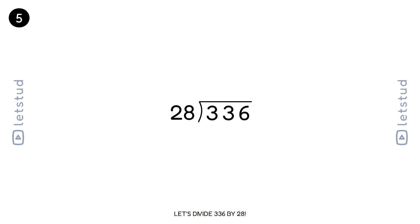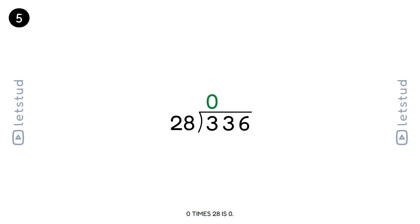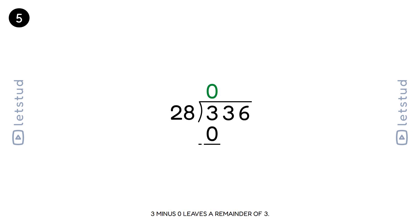Let's divide 336 by 28. We start with the first digit, 3. How many times does 28 fit into 3? 0 times. 0 times 28 is 0. 3 minus 0 leaves a remainder of 3.